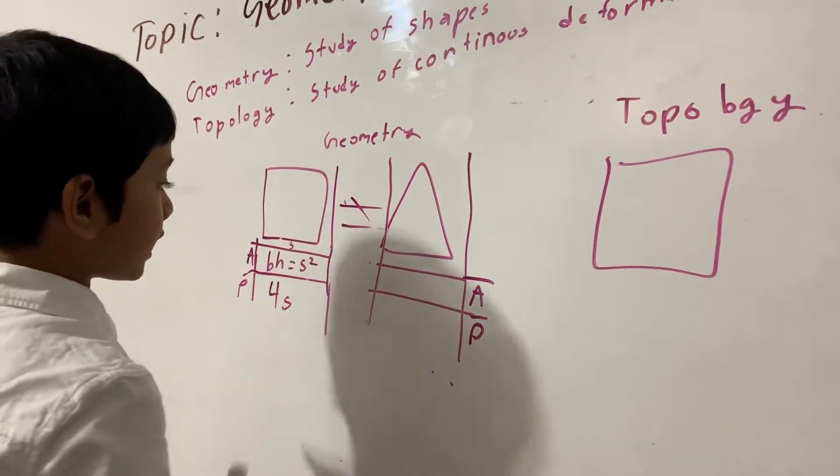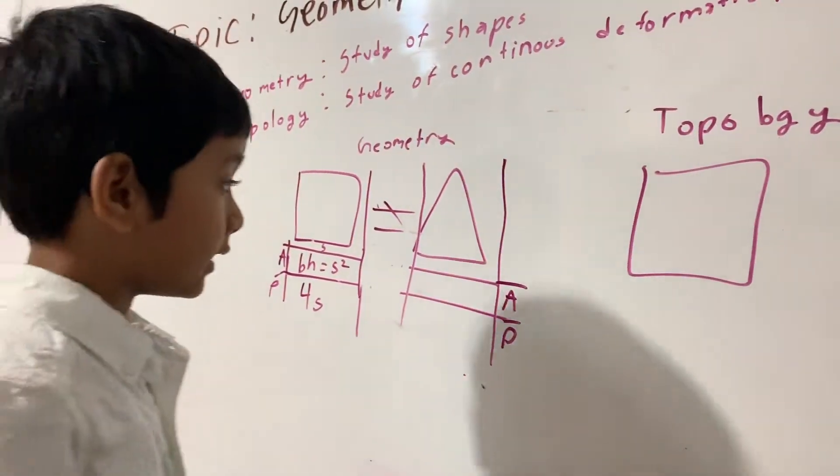And the perimeter is 4 times S because there are four sides in the square.